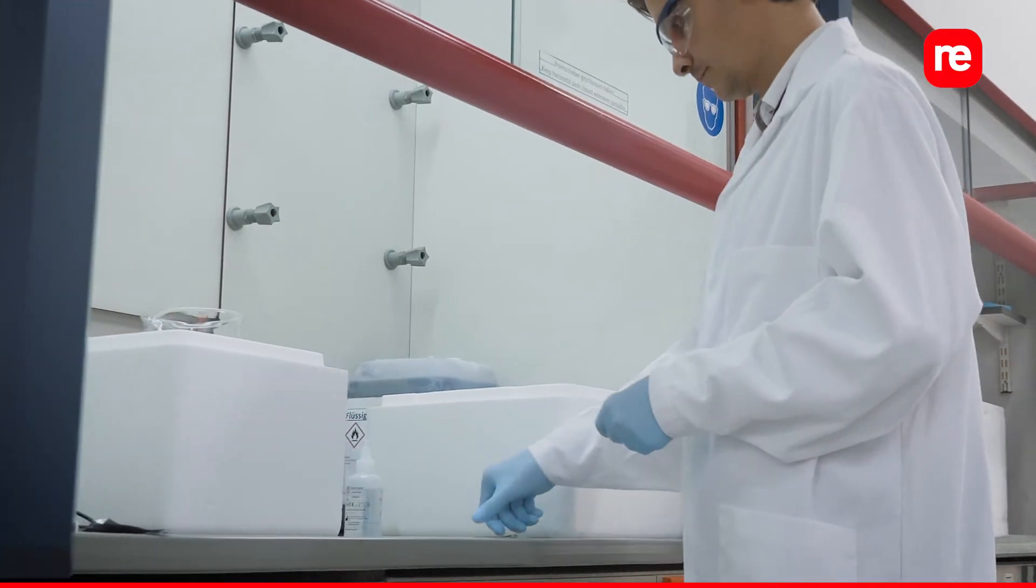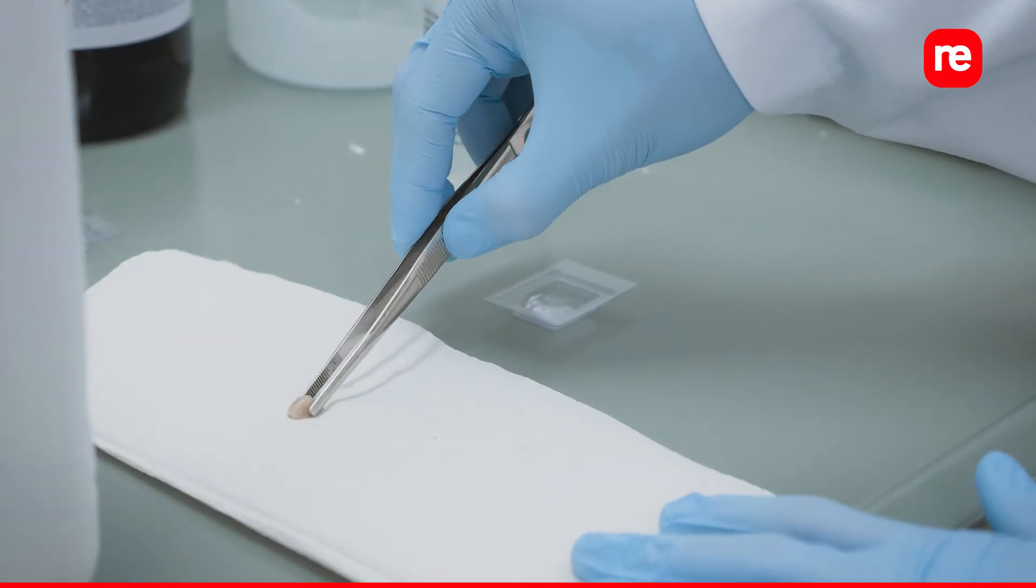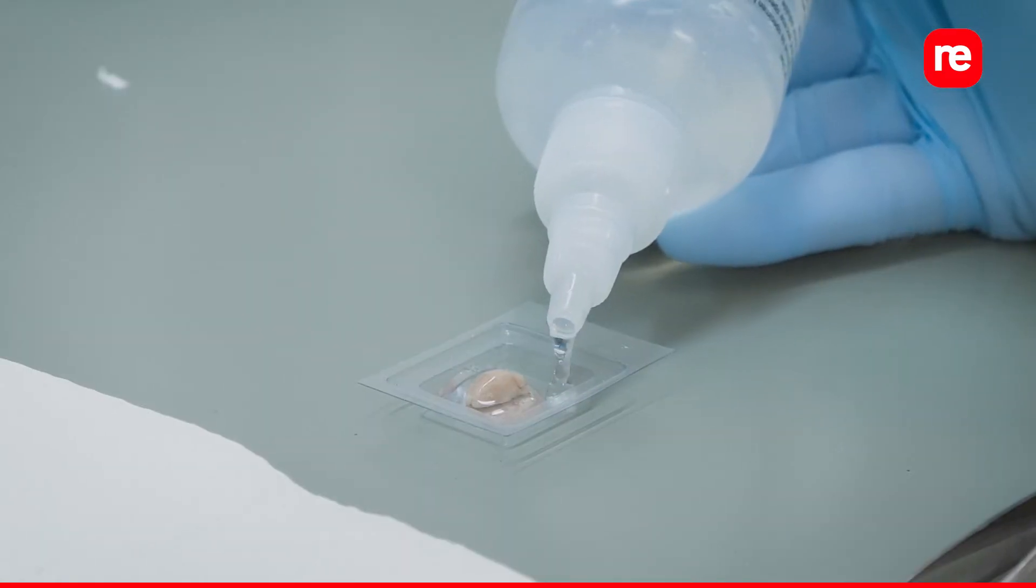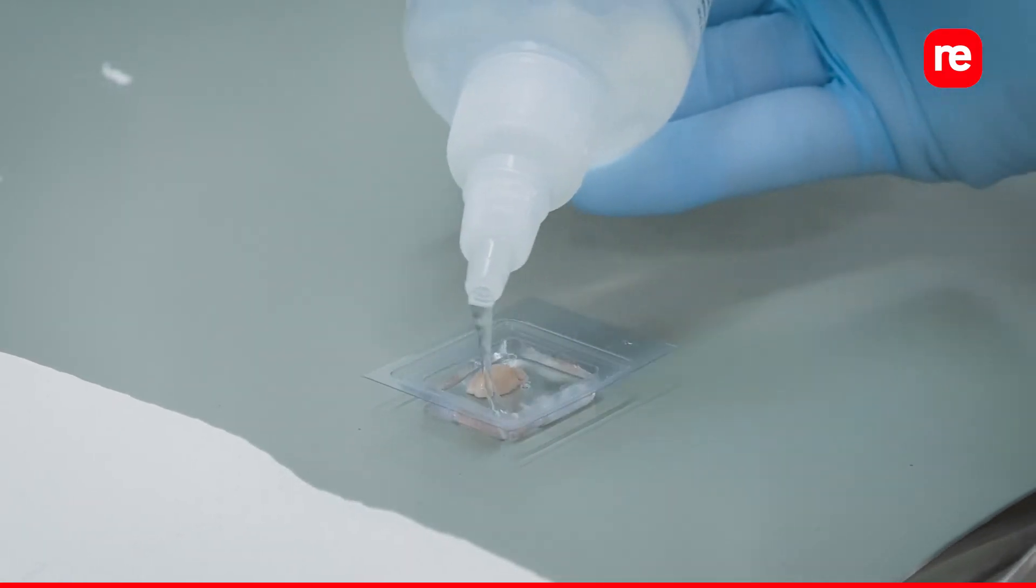For small samples, we advise to use cryomolds and OCT to freeze the sample. Place a drop of OCT at the bottom of the cryomold. Place the tissue with your region of interest to section at the bottom and fill the rest of the cryomold with OCT.